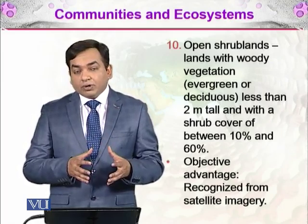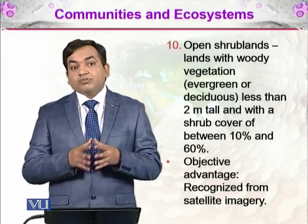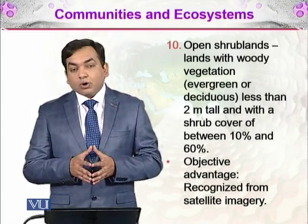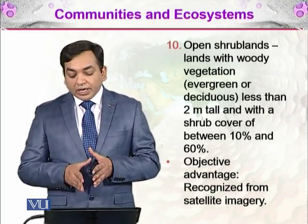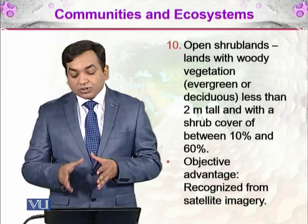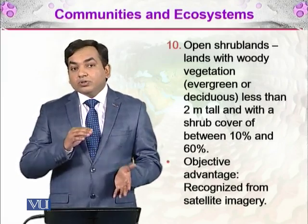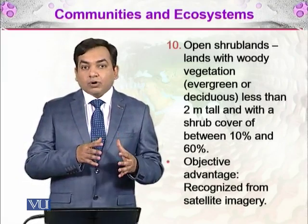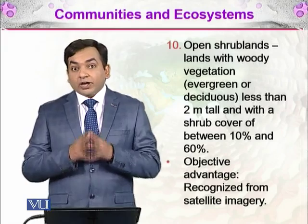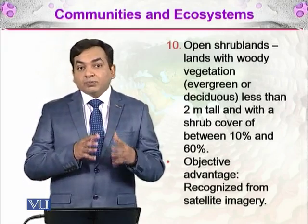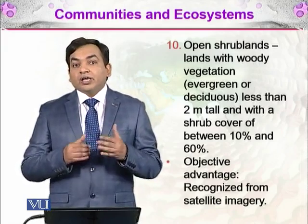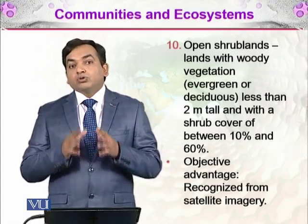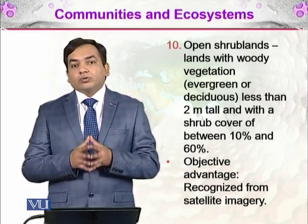Ian Woodward gave all of these classifications of different types of plants and vegetation. The objective advantage of this classification is that all of these types can be recognized from satellite imagery. We have divided the whole globe into formations, and we call those formations biomes. Each biome gives us a community of plants, animals, and other organisms which are dependent on it, and those organisms are specific to that particular area.